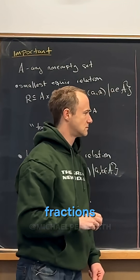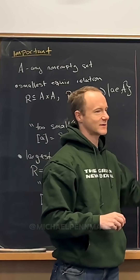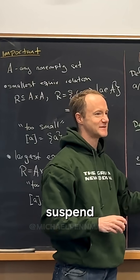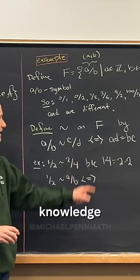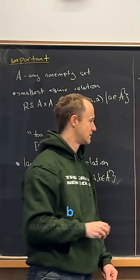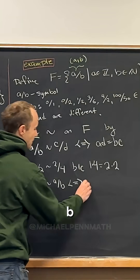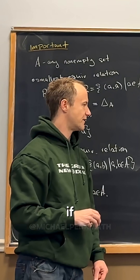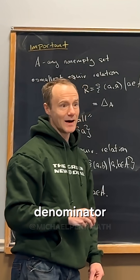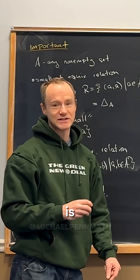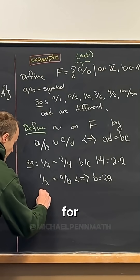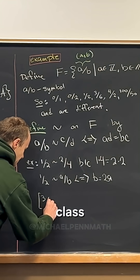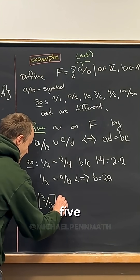We don't know these are fractions yet — suspend your prior knowledge. If b equals 2a, so if the denominator is twice the numerator. So for example, what is the equivalence class of 3 slash 5?